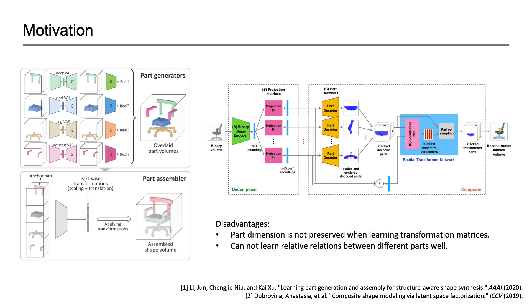In this work, we propose a part-based attention network to learn semantic part relations for better 3D shape assembly.